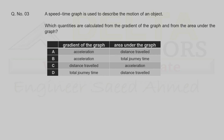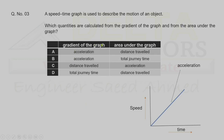Question 3. A speed-time graph is used to describe the motion of an object. Which quantities are calculated from the gradient and from the area under the graph? The gradient of a speed-time graph represents acceleration. The area under the graph represents distance traveled. Correct option is A.